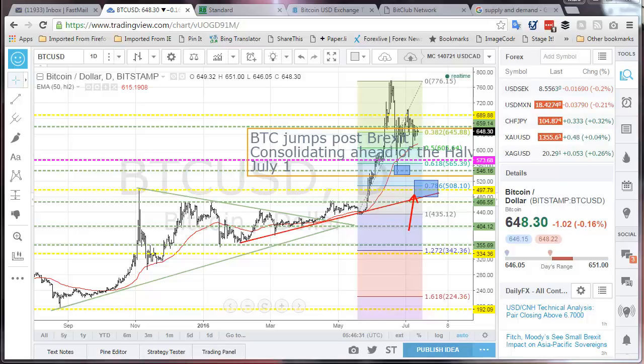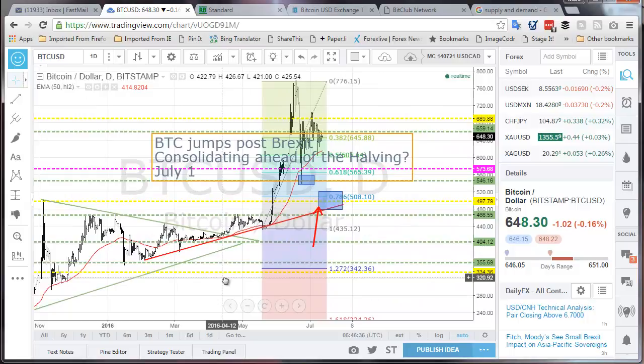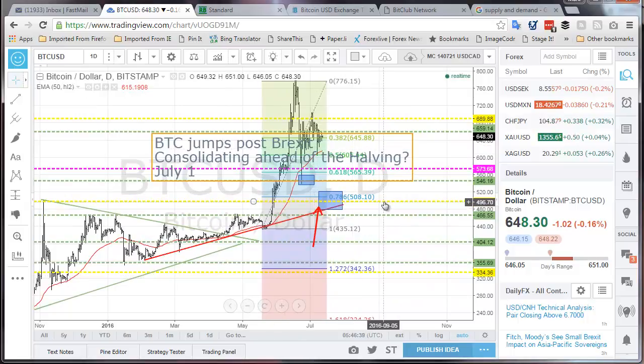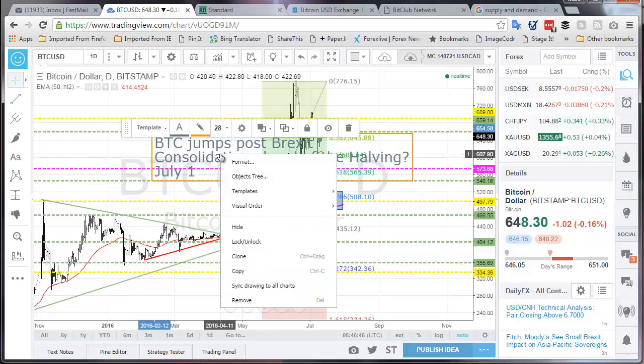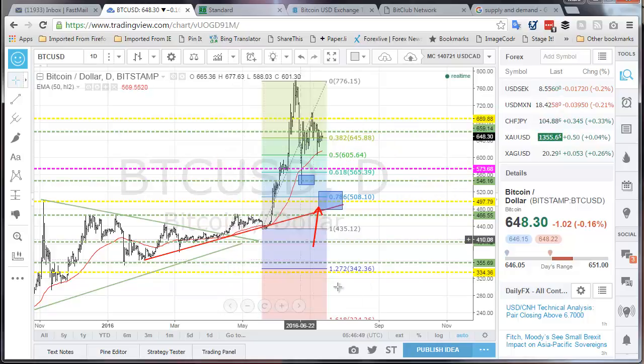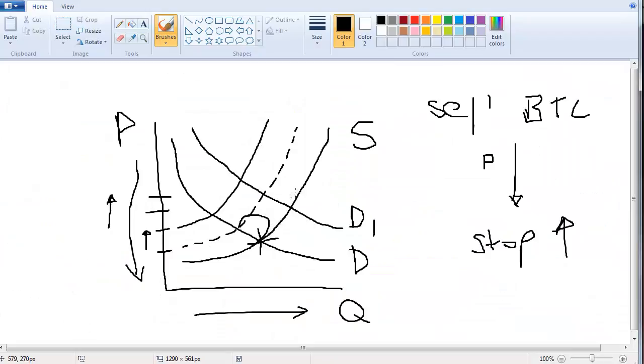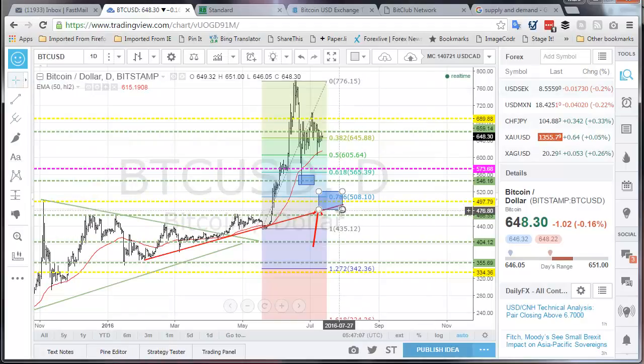So, where does that leave us? That leaves us with a view that says this thing may not be going to go down the way that basic economics would suggest because we've actually had a simultaneous change. While we've gone on our supply curve this way with the halving, we've actually had a fundamental change in the demand curve going this way.